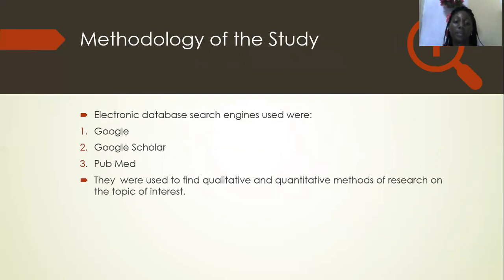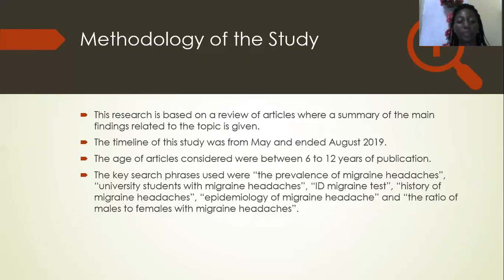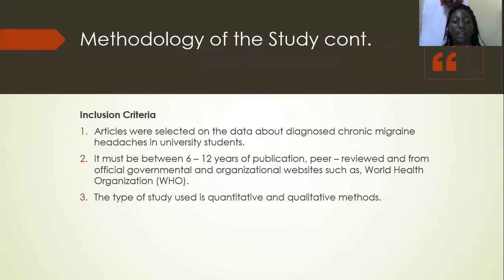Methodology of the study: electronic databases used were Google, Google Scholar, and PubMed, used to find quantitative and qualitative methods. The research is based on a review of articles summarizing the main findings related to the topic. The timeline of the study was from May to August, and articles between six to twelve years of publication were considered. Key search phrases used were: prevalence of migraine headaches, university students with migraine headaches, ID migraine tests, history of migraine headaches, epidemiology of migraine headache, and the ratio of male to female with migraine headaches.